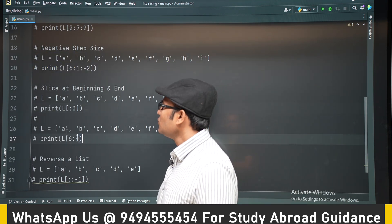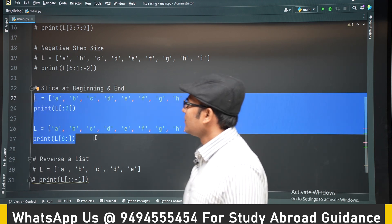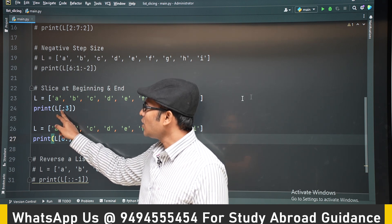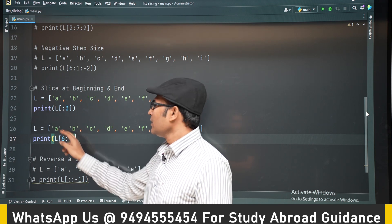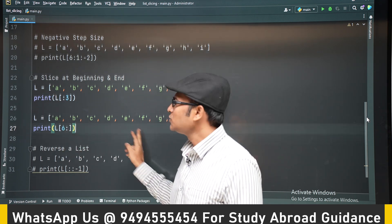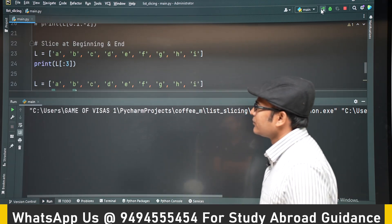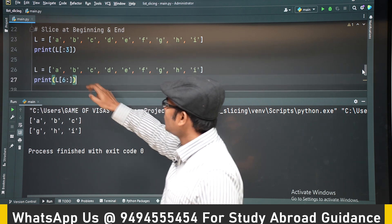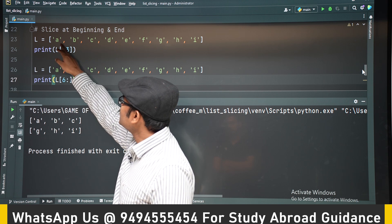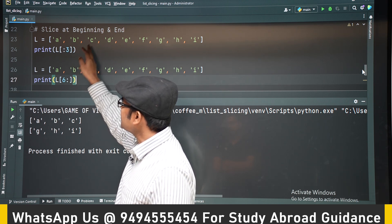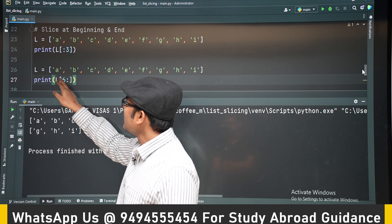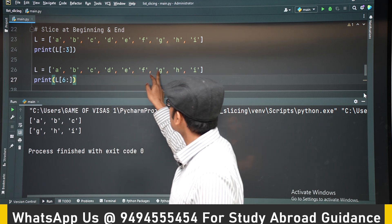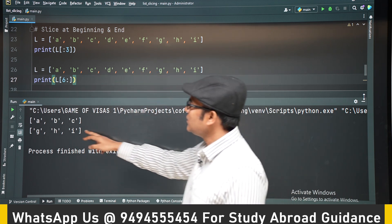Similarly, if you want to get everything till index 3, you can use this syntax without giving the start. If you don't use start, it will start from 0, and if you don't give end, it will go to the end. Now from starting till D, it will go till C, and here I have given from 6 till end, so from G it will go to I.